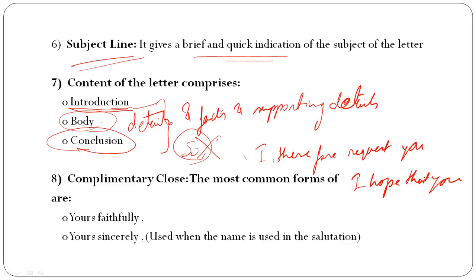The third paragraph is the conclusion. Avoid starting conclusions with the word 'so' repeatedly — such as 'so I want to absent the class.' Instead, use phrases like 'I therefore request you' or 'I hope that you will.' You can also thank the person — 'I will be grateful to you' or 'I will be thankful to you.' If you have already used 'I will be grateful to you,' do not repeat 'Thank you' again. Use 'Thank you' only if you have not expressed gratitude earlier.